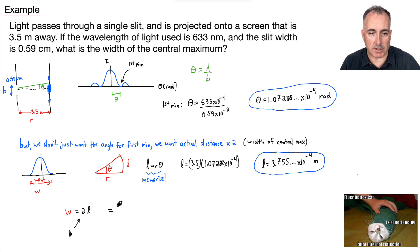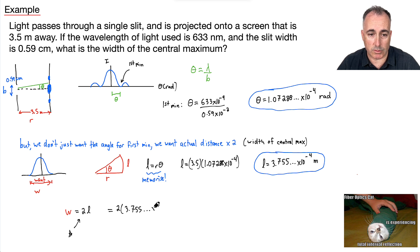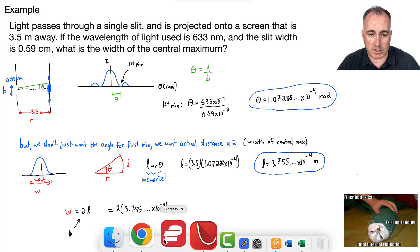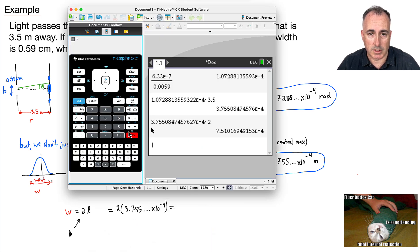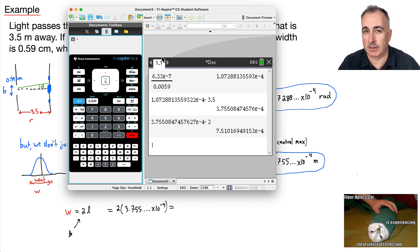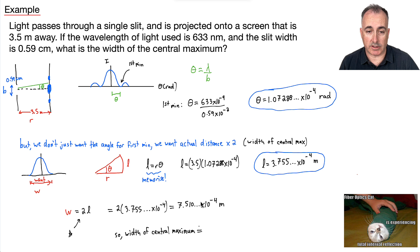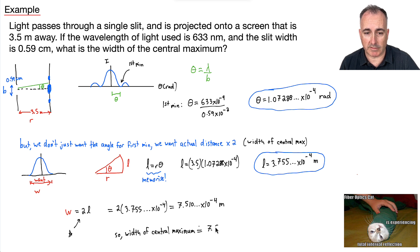W equals 2 times my length. Don't use rounded answers when doing calculations — always keep all the decimals. So that gives me 7.510 times 10 to the minus 4 meters. To two significant figures, the width of the central maximum is 7.5 times 10 to the minus 4 meters. It's very small, but that's okay — it should be.